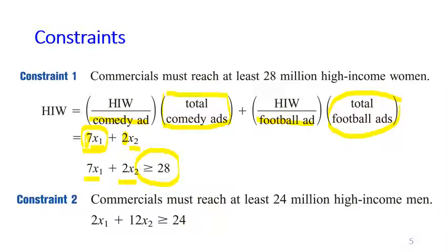Another constraint says that commercials must reach at least 24 million high-income men. Again, for each comedy ad, we get the attention of 2 million high-income men, and then we put as many as X1 comedy ads, so 2 times X1.